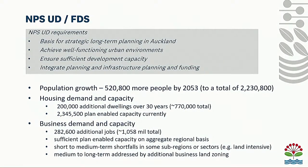The Future Development Strategy is done under the National Policy Statement Urban Development, so that is an RMA instrument. What the NPS requires the strategy to do is to form the basis for our strategic long-term planning, and it must also inform the Long-Term Plan. It has to achieve the concept of well-functioning urban environments, ensure sufficient development capacity, and bring together the integration of land use and infrastructure — both the planning and the funding of infrastructure.